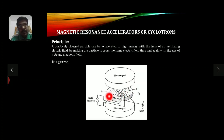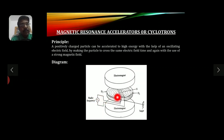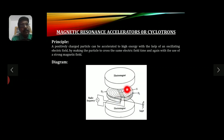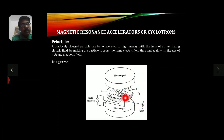Looking at the diagram, the circular parts in the middle are called dees — D1 and D2 — because they are shaped like the capital letter D. These two dees are connected to a radio frequency oscillator that continuously changes their polarities. The charged particle gets circulated in these two dees, and when it acquires very high energy it is brought out through the deflector plate to fall on the target.